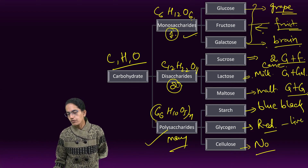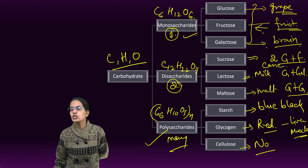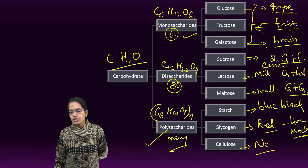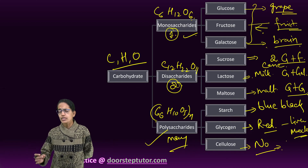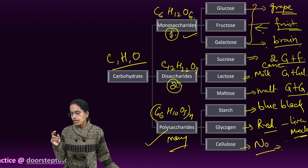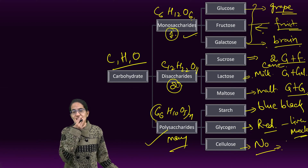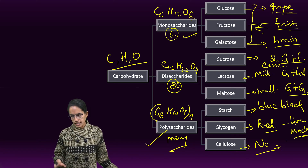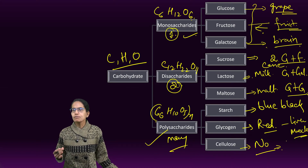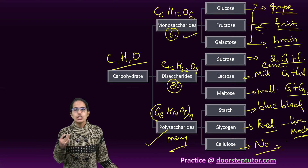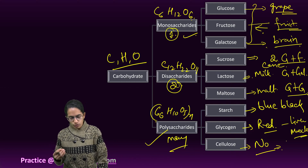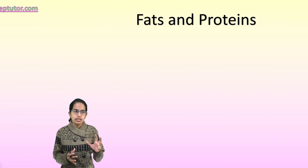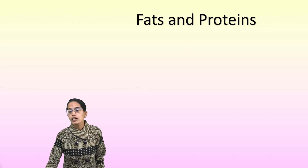Glycogen is stored in the liver and muscles — extra glucose gets converted into glycogen stored in the liver and muscles. Cellulose is found in fibrous cell walls, stalks, stems, and the woody parts of trees. Good examples are cotton, jute, and linen. Cellulose is an important roughage — it prevents constipation, is fibrous, helps keep the gut clean, and is an important dietary component for grass-eating animals.